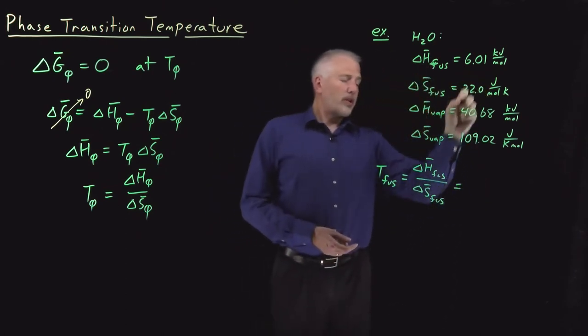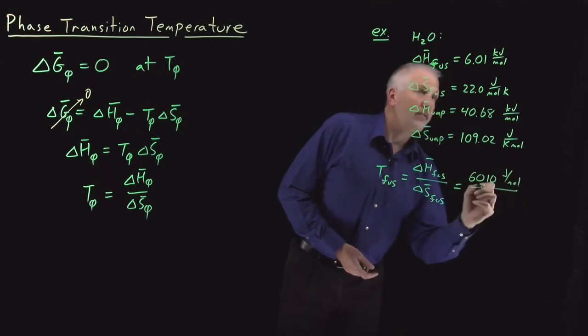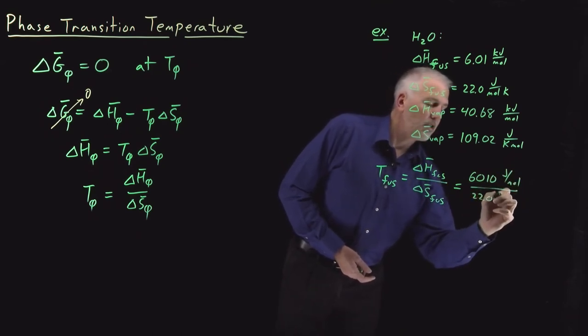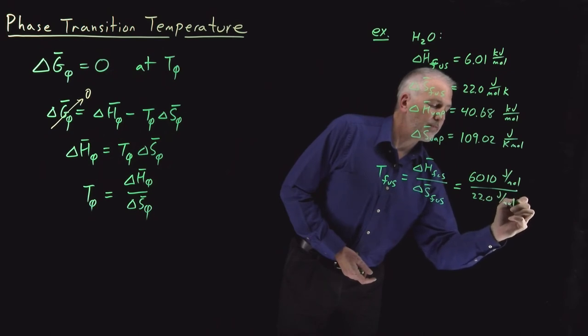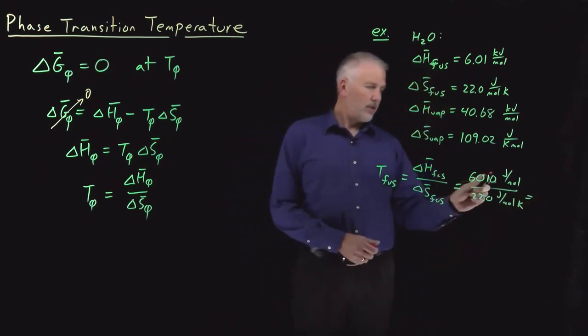So if we take the ratio of these two values, 6.01 kilojoules per mole, that would be 6,010 joules per mole. If I divide that by 22 joules per mole kelvin, the units, joules cancel.